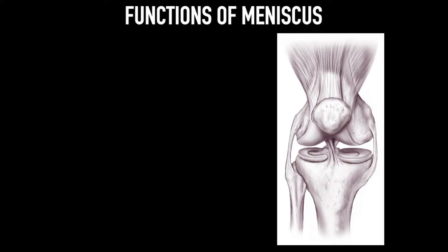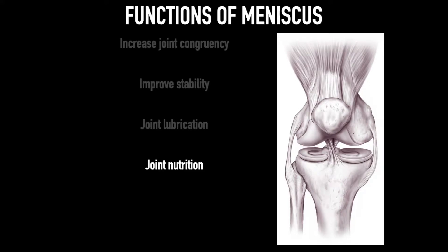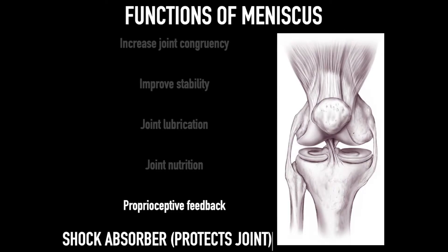The meniscus increases joint congruency. As we know, the upper bone — the femur — is circular, and the lower part is relatively flatter, so the concave meniscus leads to an increase in joint congruency. The meniscus also improves stability, more so on the medial side. Joint lubrication is also provided by the meniscus, as is joint nutrition, and it also gives some proprioceptive feedback.